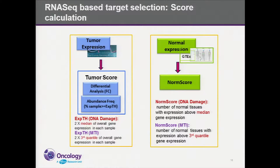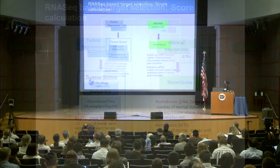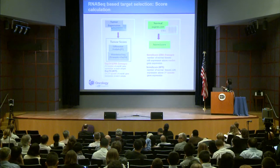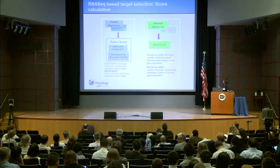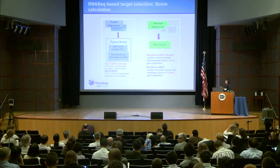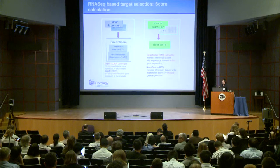Tumor scores are calculated from two factors. First, we require tumor versus normal differential expression to be significant for these potential targets. Second, using RNA-seq data we can quantitatively estimate abundance frequency — in other words, the prevalence of target expression in a tumor type, as a percentage of samples expressed above a certain expression threshold. These thresholds are defined differently for different payload classes; the expression threshold is higher for microtubule-based payload than for DNA damage payload. Similarly, we calculate a normal score reflecting expression in normal tissues using GTEx data, as the number of normal tissues expressing targets above a certain threshold.